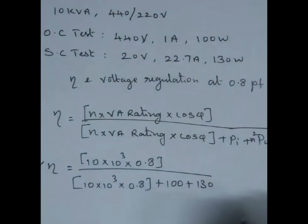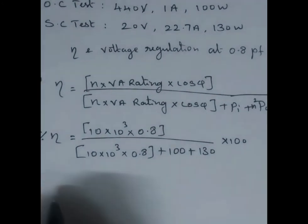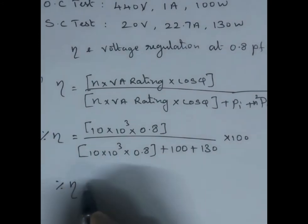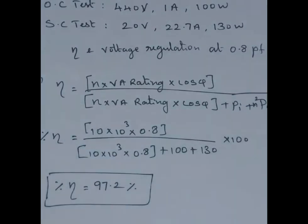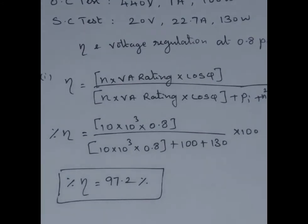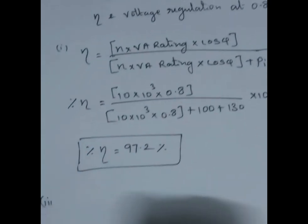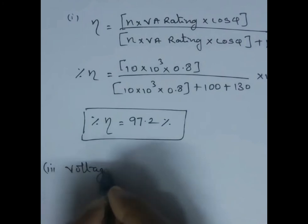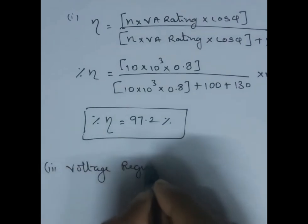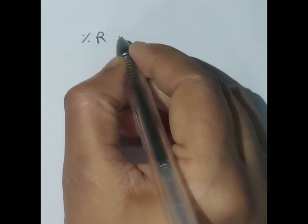To get percentage efficiency, we multiply by 100. Simplifying, percentage efficiency = 97.2%. Now we have found efficiency. Next, we have to find out voltage regulation.